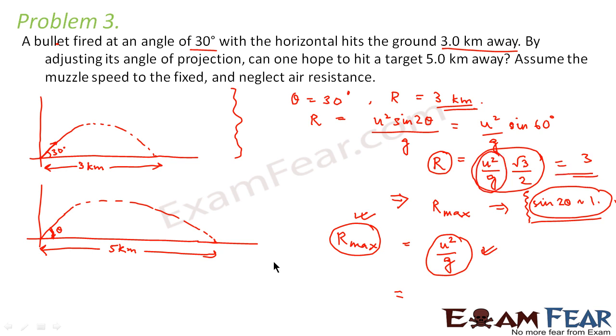So u squared by g would be, from this equation we can calculate u squared by g which comes out to be equal to 3 into 2 by root 3. So this comes out to be 2 root 3. So that means R max is equal to 2 root 3. So this is the maximum range that this projectile can go. So it cannot go beyond this range.